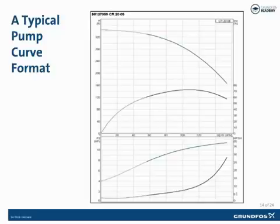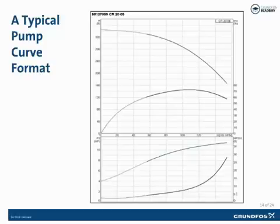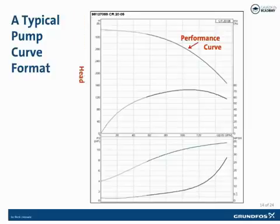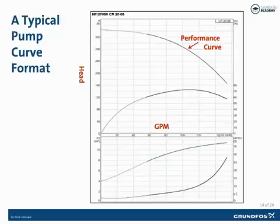A key to understanding pump operation is the understanding of pump curves. Pump curves are a map of a pump's performance and provide much of the needed information about its operating characteristics. Pump curves can be constructed in many formats, but all contain certain amounts of data. The first curve we'll discuss is the pump performance curve, also known as the head capacity curve. The vertical axis is pressure measured in feet of water or PSI, and the horizontal axis is flow measured in gallons per minute. The amount of flow a pump can produce is dependent on the head present in the system.